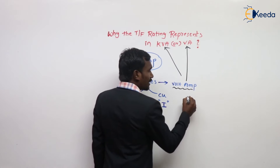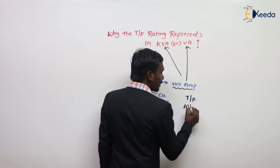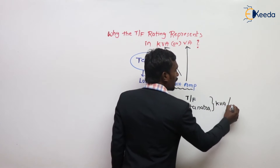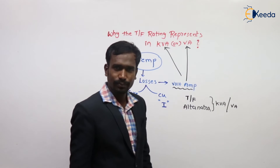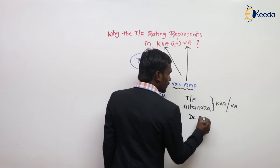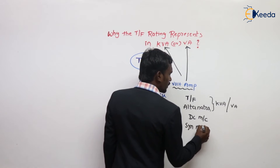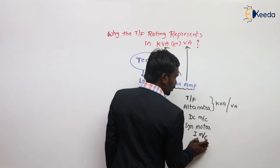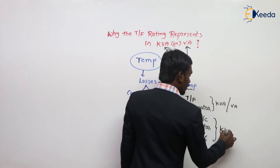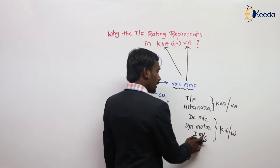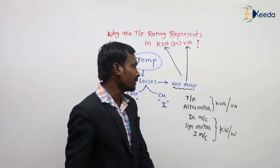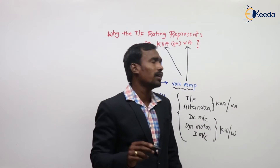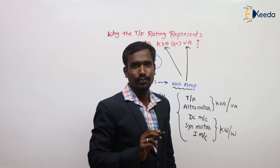You have to remember: transformer rating as well as alternator rating — these two ratings represent in KVA or VA. Other than this, DC machines, synchronous motor, and induction machines — their ratings represent in kilowatts or watts. Transformer and alternator (that is, synchronous generator) represent in KVA or VA. Remember this.